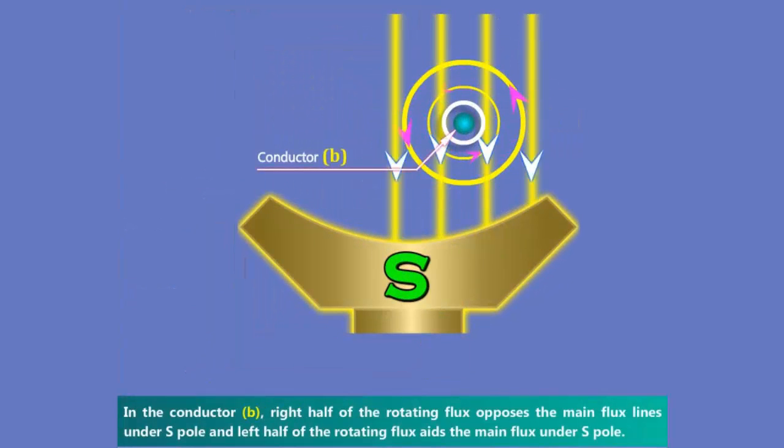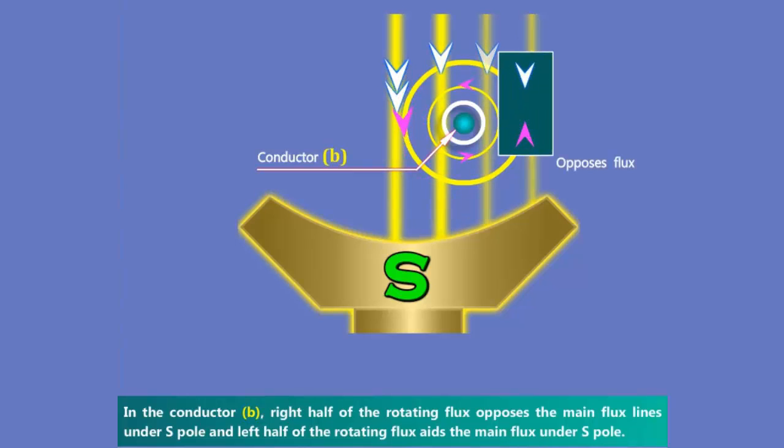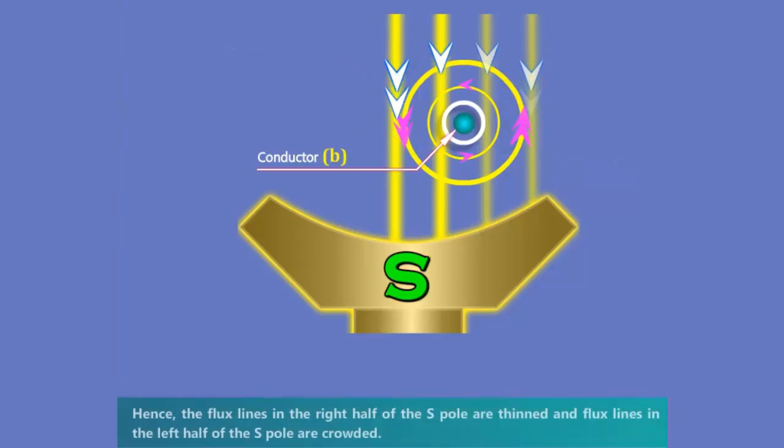In conductor B, the right half of the rotating flux opposes the main flux lines under S pole and left half of the rotating flux aids the main flux under S pole. Hence, the flux lines in the right half of the S pole are thinned and flux lines in the left half of the S pole are crowded.